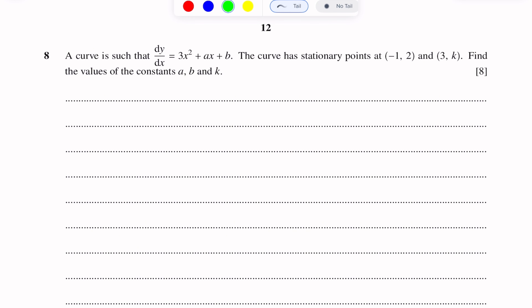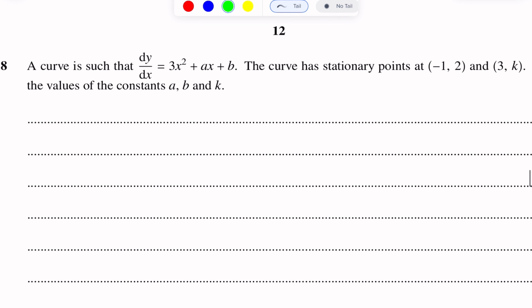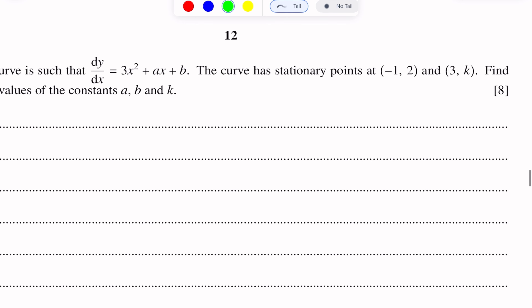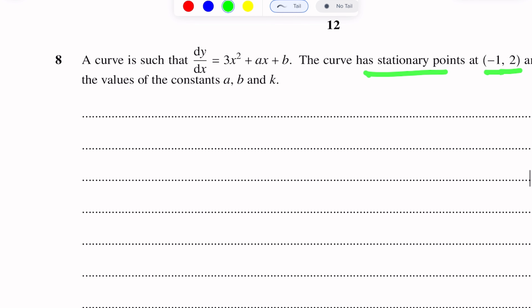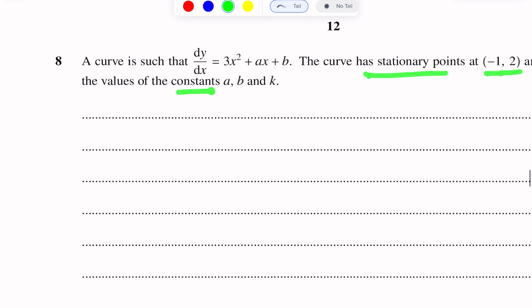Question No. 8. The curve is such that dy/dx is equal to 3x² plus ax plus b. The curve has stationary points at (-1, 2) and (3, k). Find the values of constants a, b, and k.